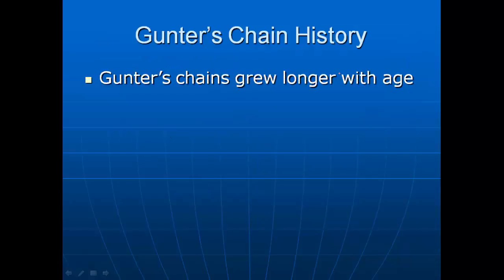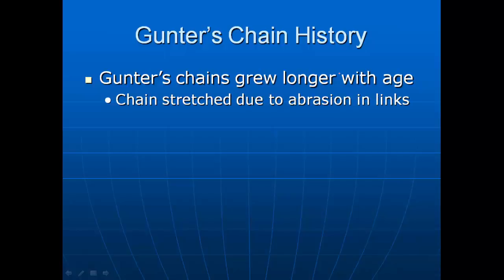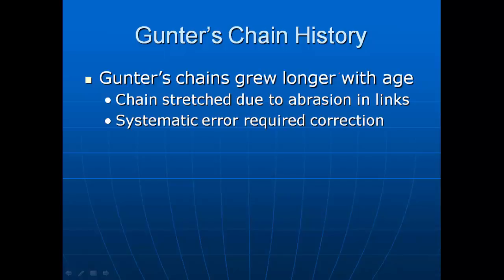The Gunter's chain, as it grows older, gets longer. Think about dragging it through soil — particles of sand get between the links where metal rubs on metal, and the abrasive soil wears away the metal. As the metal wears away at contact areas, the chain gradually gets longer over time, producing a systematic error. These chains stretched due to abrasion in the links, and the systematic error would require correction.